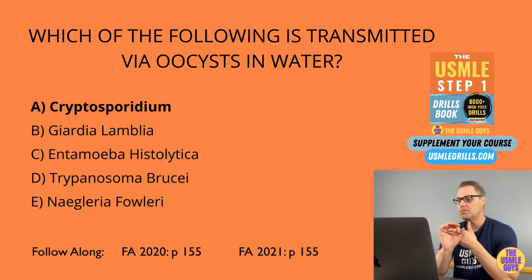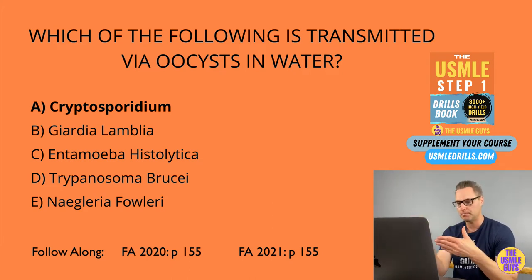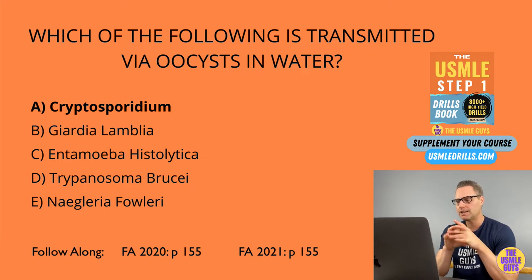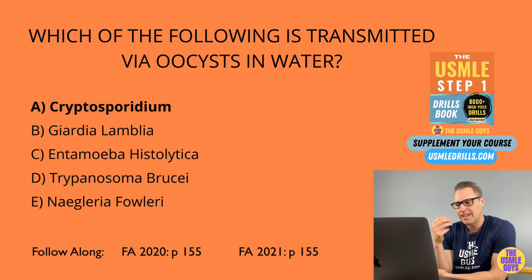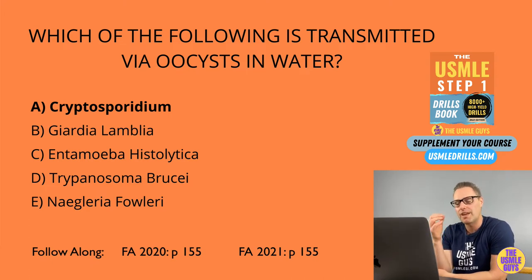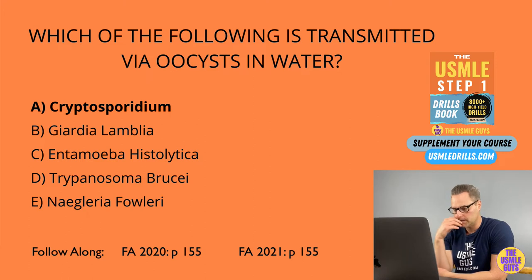So we've got Giardia, Entamoeba histolytica, and Cryptosporidium. First, let's look at Giardia lamblia. This is going to be transmitted via cysts in the water, and this leads to that classic bloating, flatulence, and foul-smelling diarrhea. Classically, they might say that it floats in the water, indicating that it's fatty. The classic scenario with Giardia is the hiker who drinks from a stream and ingests these cysts. Animals spread fecal matter through the water; you ingest the cysts, you get Giardia.